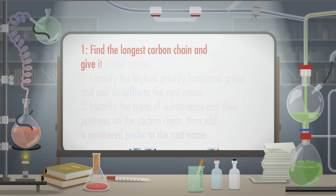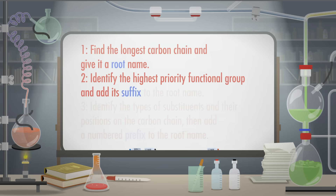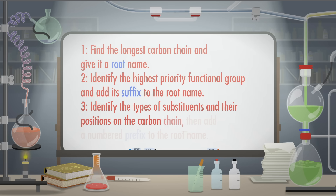Probably because vanillin is easier to say and put on a bottle than 4-hydroxy-3-methoxybenzaldehyde. But that longer name is a systematic name that follows a set of rules, which means anyone who knows those rules can draw the structure. There are three basic steps to IUPAC's systematic naming. Number one: find the longest carbon chain and give it a root name. Number two: identify the highest priority functional group and add its suffix to the root name. And number three: identify the types of substituents and their positions on the carbon chain.